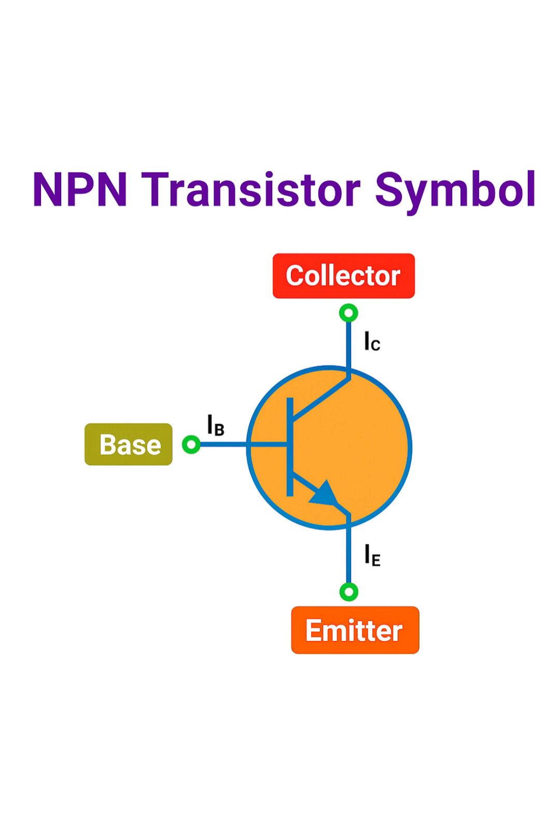The basic function of a transistor is to act as an electronic switch or an amplifier. It does this by using a small current at the base to control a much larger current flowing between the collector and the emitter.